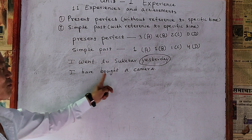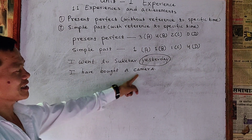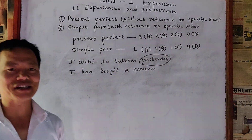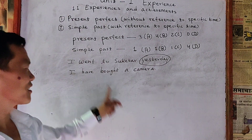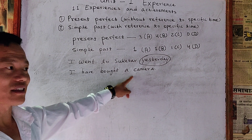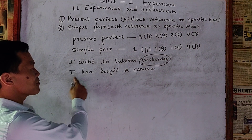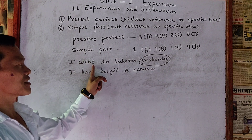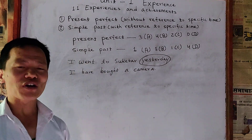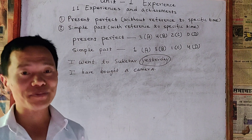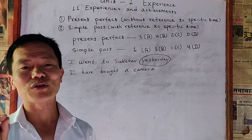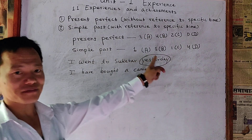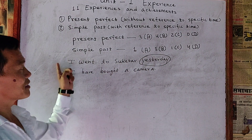But in the example 'I have bought a camera,' the reader does not know when I bought a camera. That's why we use present perfect — we share only our experience. But using simple past, or past tense, we share our experience with references, with details, with the story. That's the difference between present perfect and past tense.